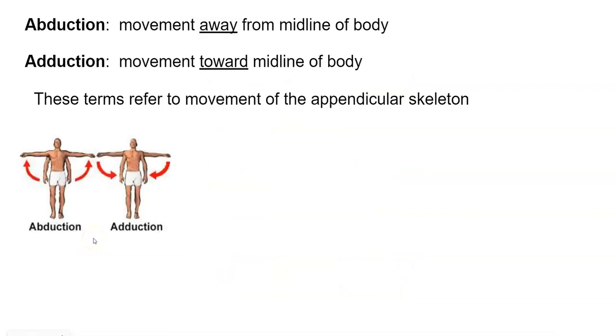We have abduction, that's movement away from the midline. And then adduction is movement towards the midline. We're talking about terms that apply to the appendicular skeleton, the arms and legs.